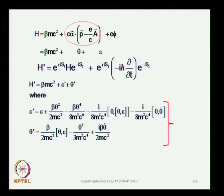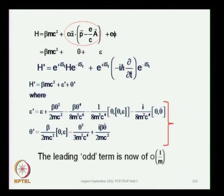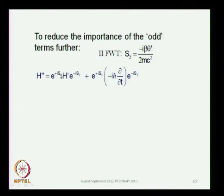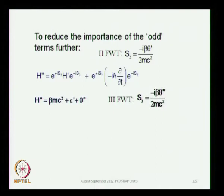We discussed the first Foldy-Wouthuysen transformation, and then you have the leading odd terms which are of the order of 1/m. Then what we are going to do is to have another Foldy-Wouthuysen transformation. You subject the first transformed Hamiltonian to the second Foldy-Wouthuysen transformation S₂ through this operator, and now you get a transformed Hamiltonian H double prime, then you do it one more time following the same procedure.